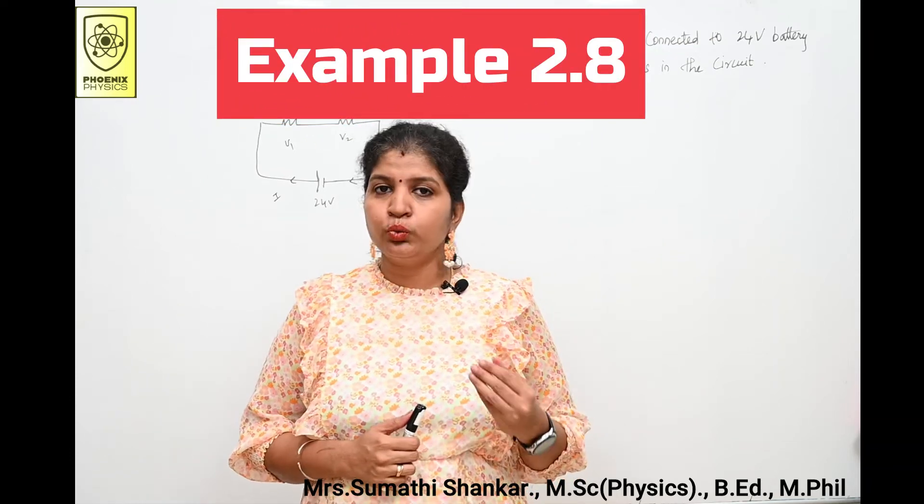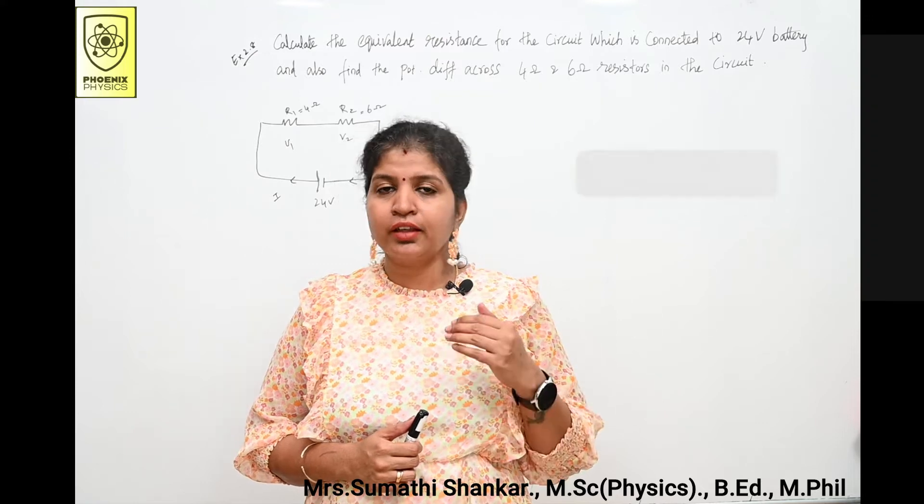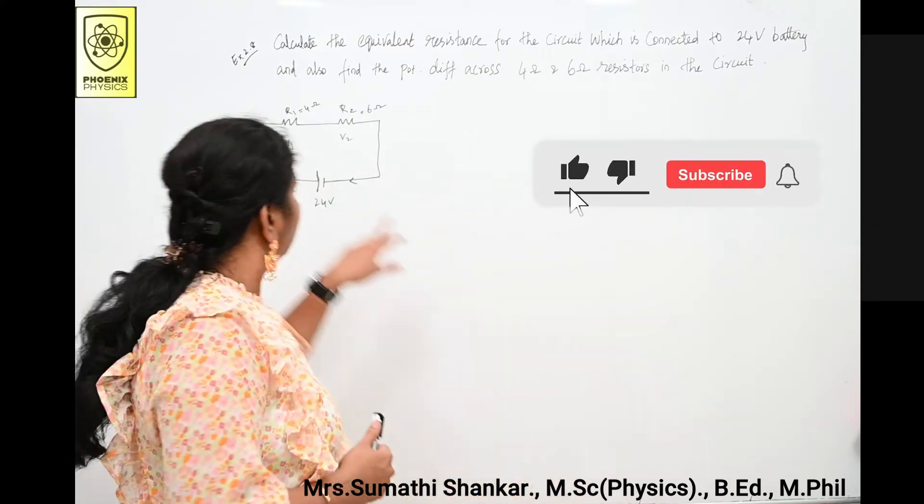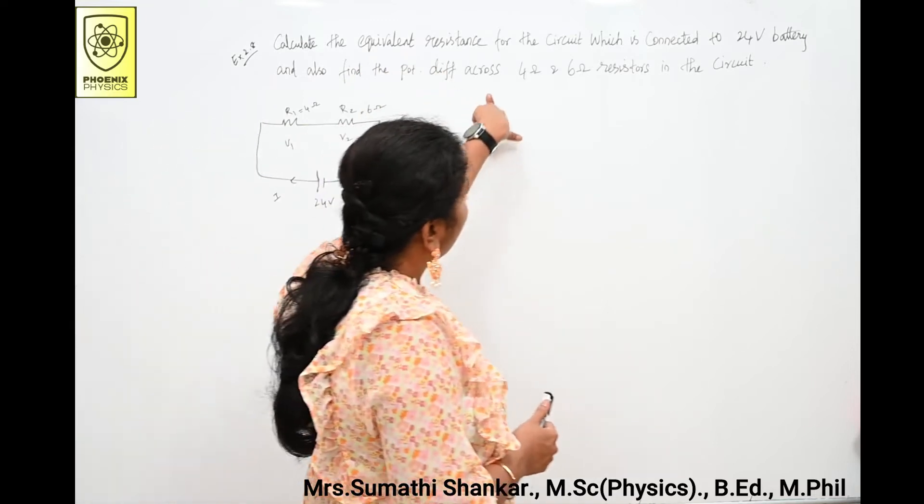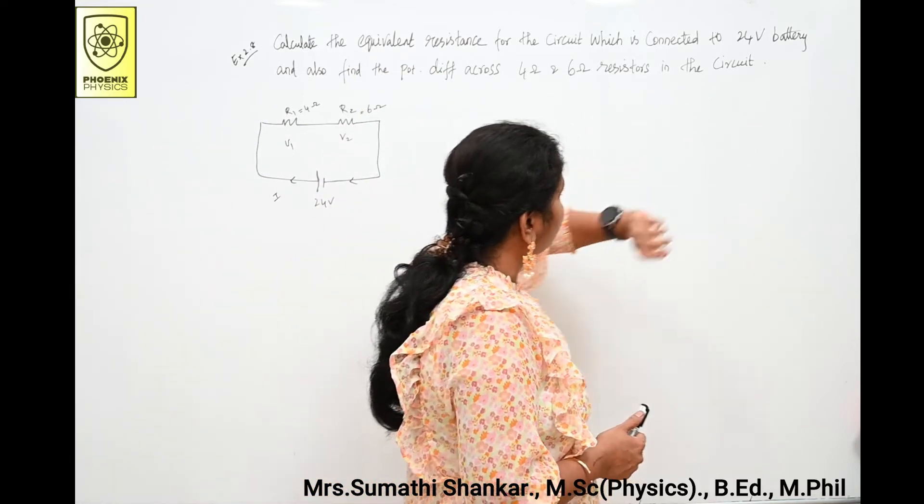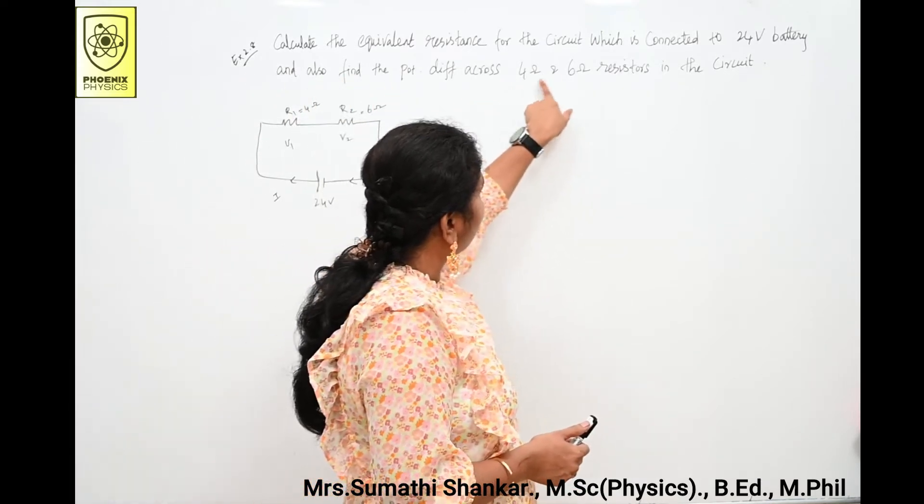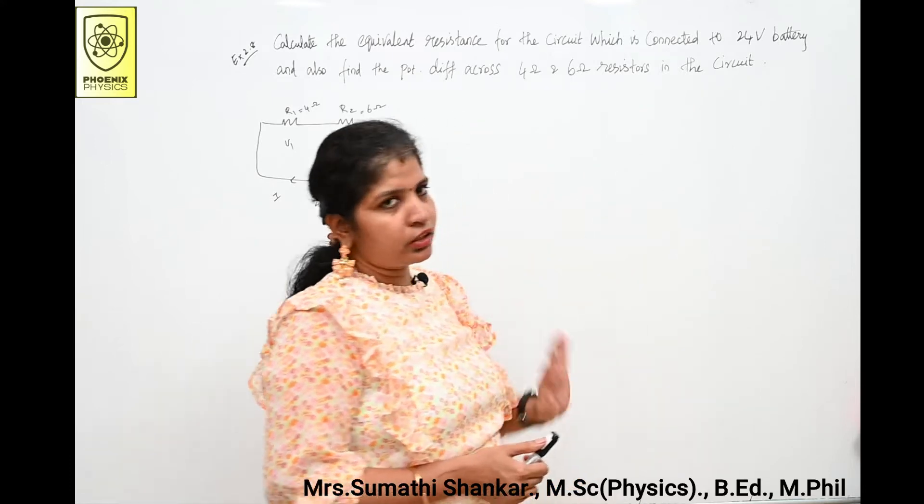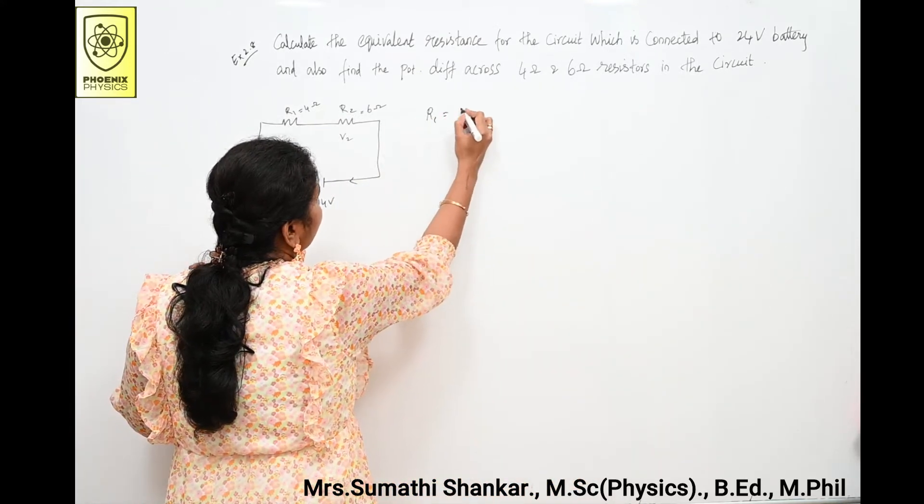Hello friends and my dear students, welcome back to my channel Phoenix Physics. Today we are going to discuss example 2.8: Calculate the equivalent resistance for the circuit which is connected to 24 volt battery and also find the potential difference across 4 ohm and 6 ohm resistors in the circuit. What is given? R1 is equal to 4 ohm.